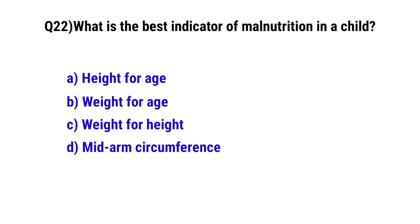Question number twenty-two: What is the best indicator of malnutrition in a child. The correct option is B, weight for age.